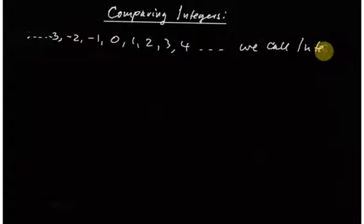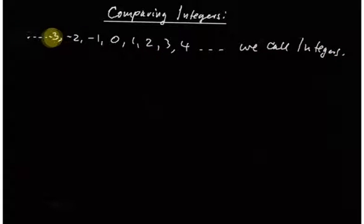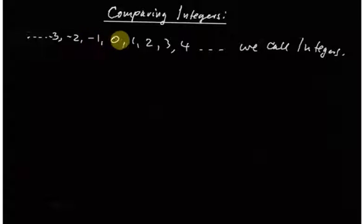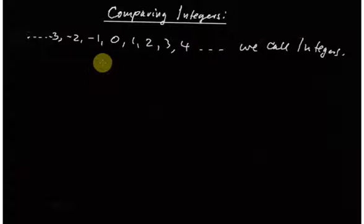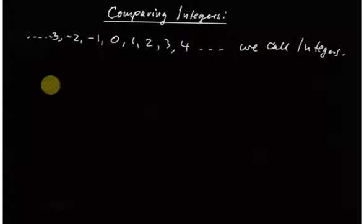These are what we call integers. These integers are increasing by one: negative three plus one is negative two, negative two plus one is negative one, negative one plus one is zero, zero plus one is one, plus one is two, plus one is three, and so on. So they are going in that direction. We can represent the integers on a number line and from there we can compare them.